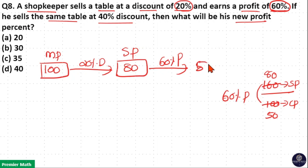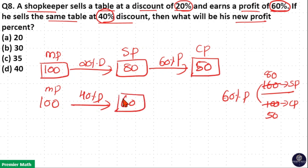So cost price is 50 rupees. Now, if he sells the same table at 40% discount, we need to find out the profit. The marked price is 100 rupees, and if he gives 40% discount, 100 minus 40, 60 rupees is the selling price. And we already know cost price is 50.